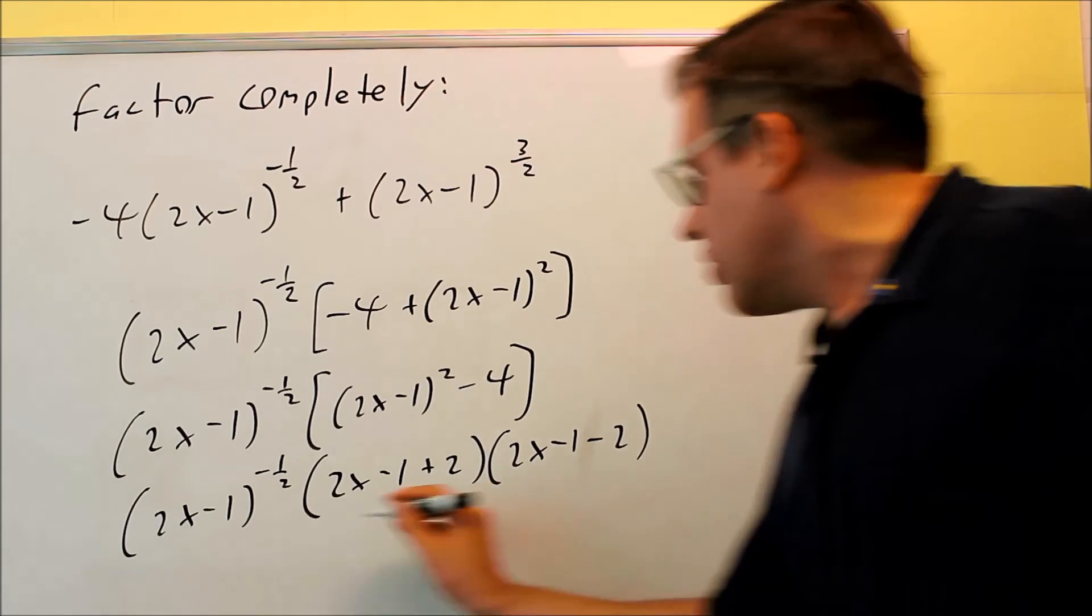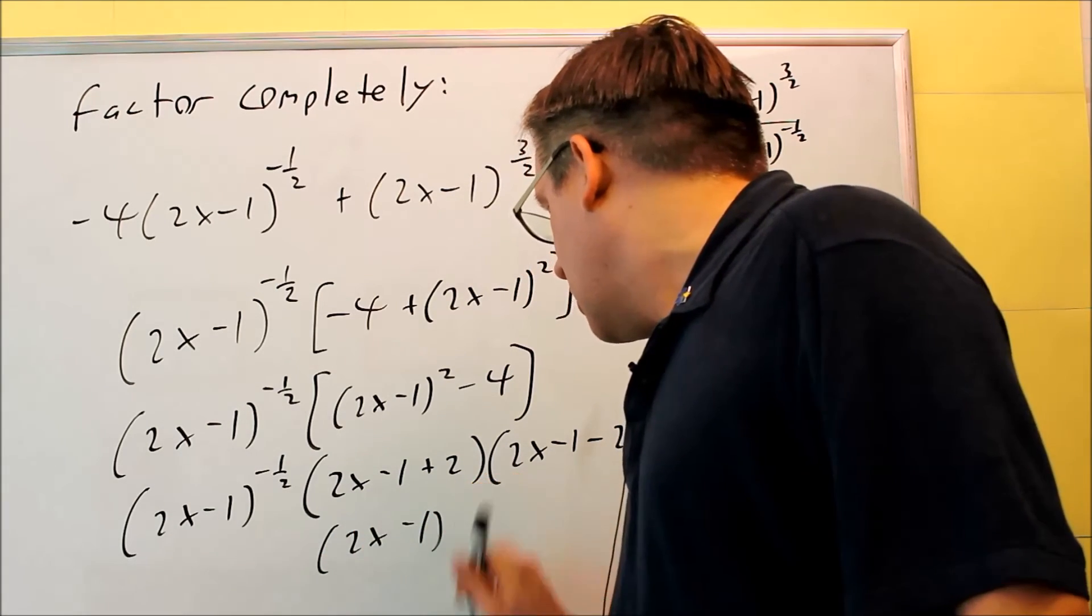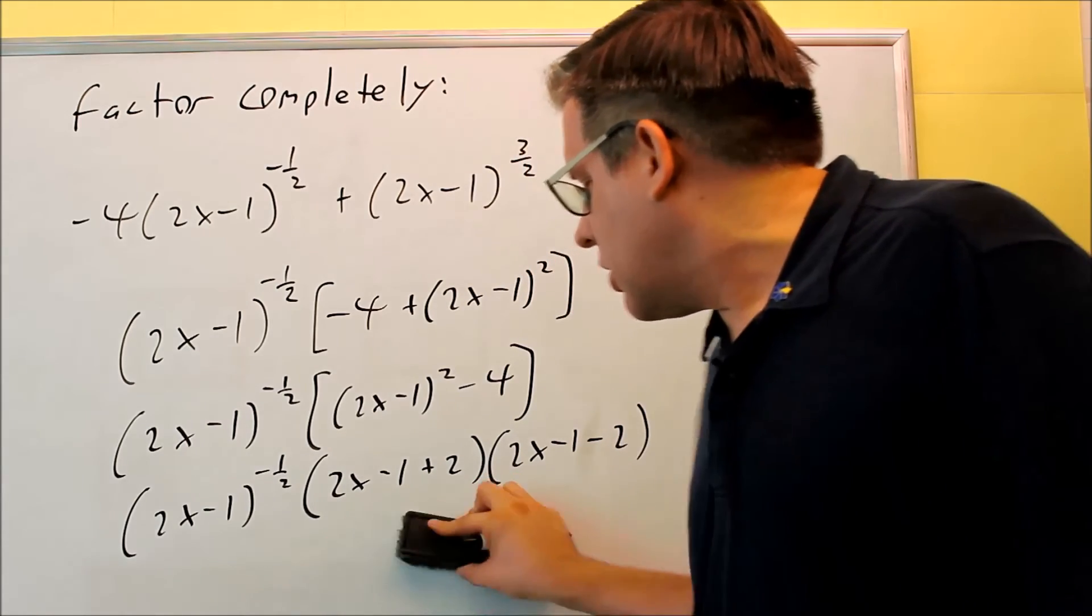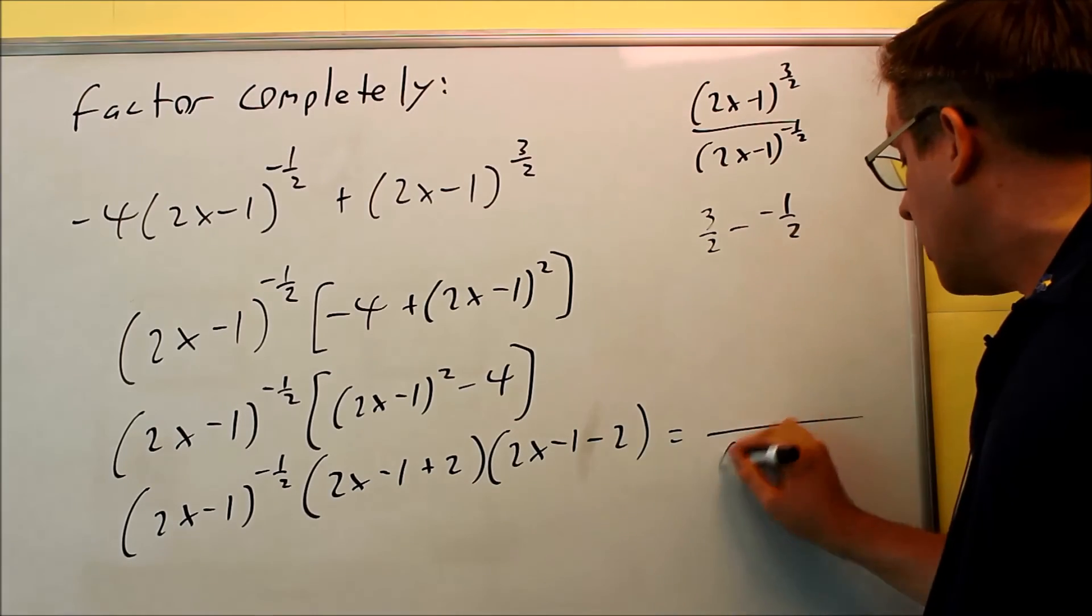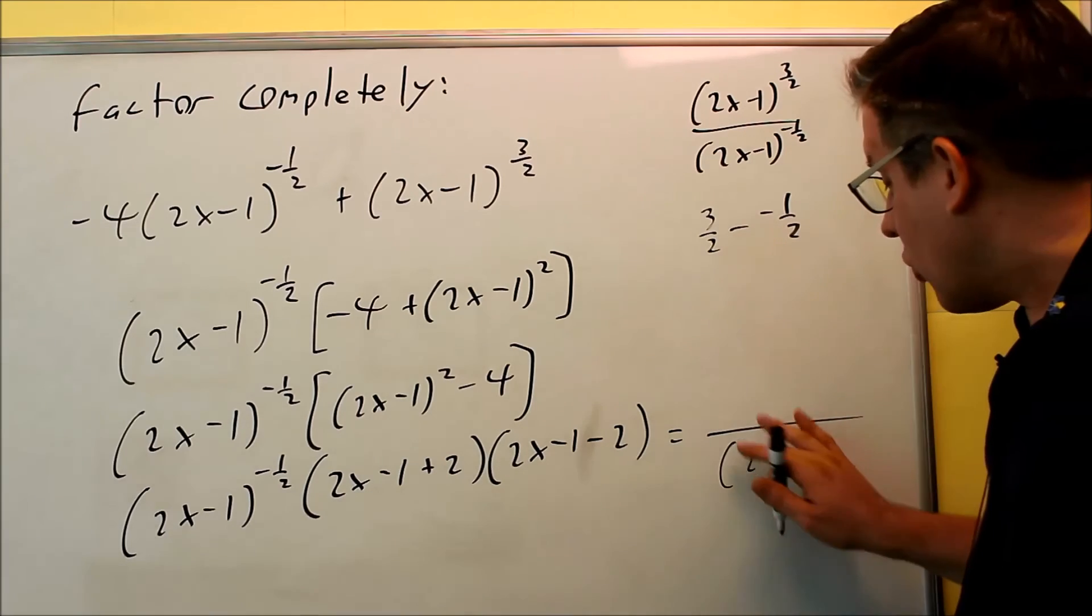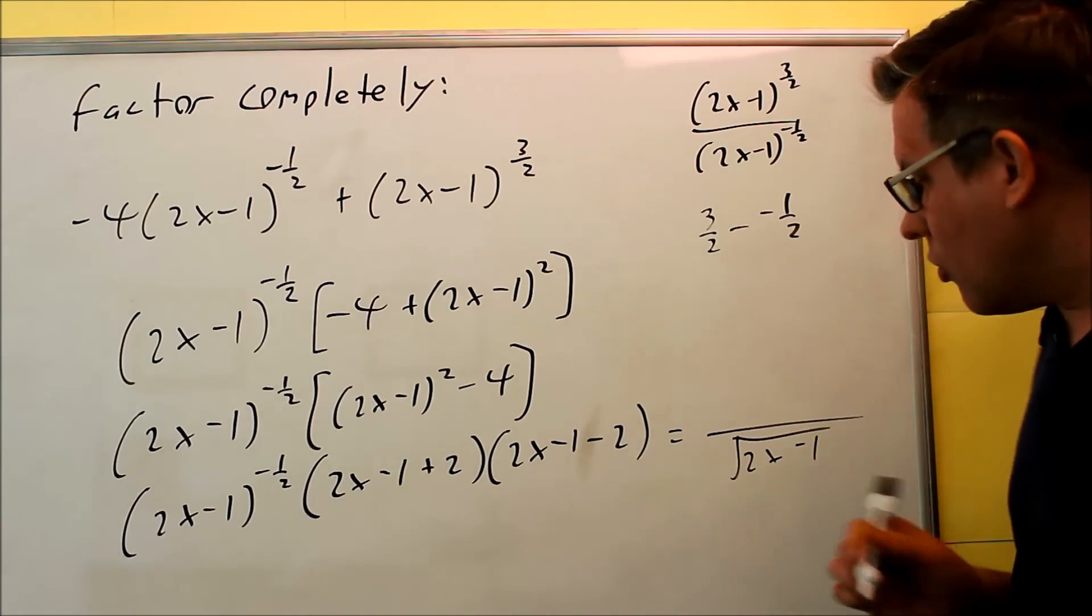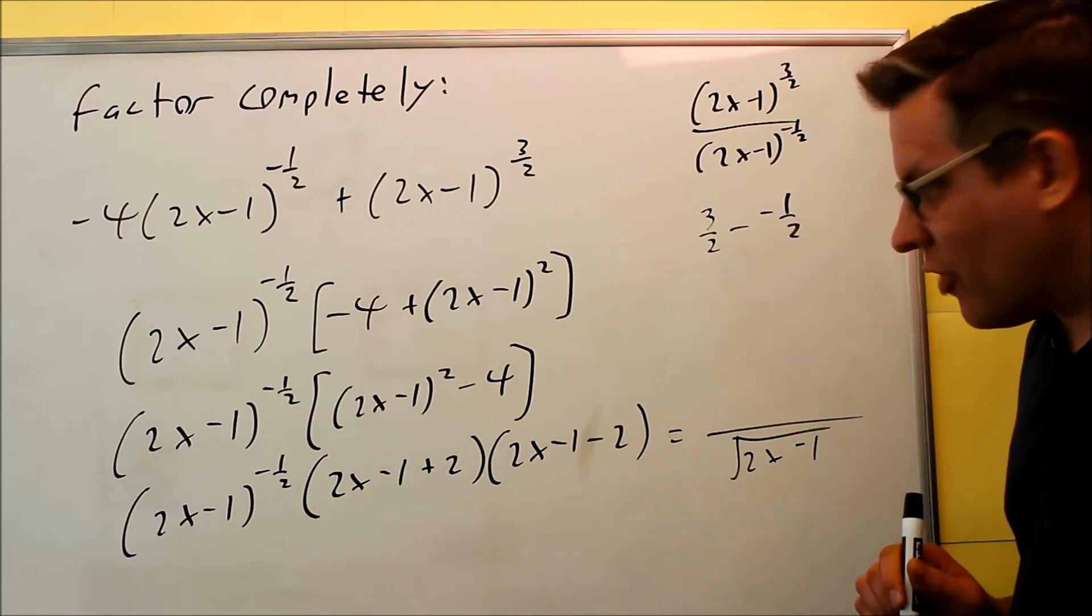And the last thing you're going to do is just simplify all that, so 2x minus 1 to negative 1 half. Now what I'll do is, let me actually rewrite it this way. Let me put that on the bottom, 2x minus 1 to the 1 half power. You can either write it as a 1 half, or you could also write it as a square root as well. So either way you want to do that, it's fine.